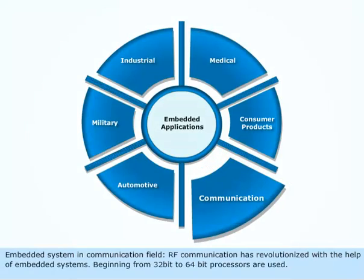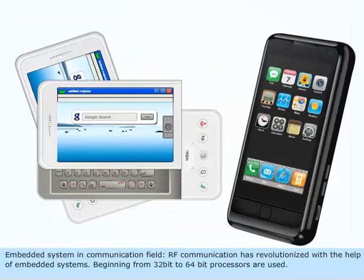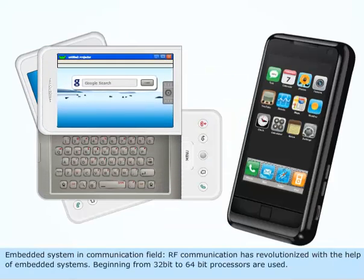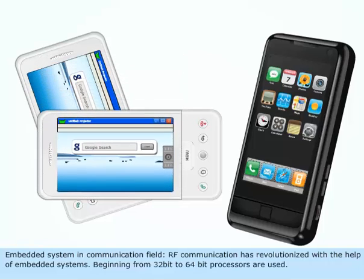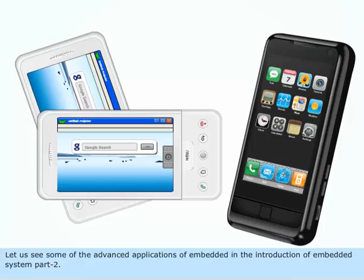Embedded systems in the communication field: RF communication has been revolutionized with the help of embedded systems, with processors ranging from 32-bit to 64-bit being used. Some of the advanced applications of embedded systems will be seen in the introduction to embedded systems, part 2.